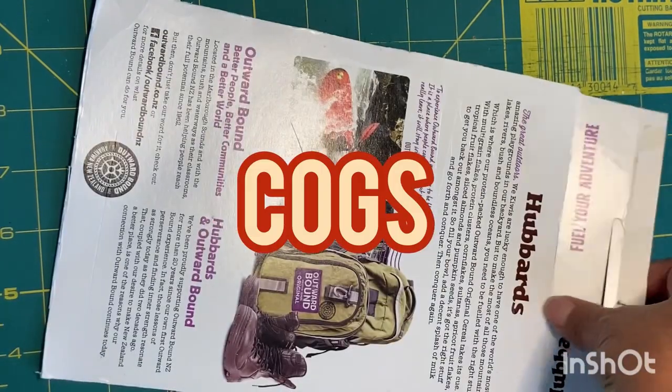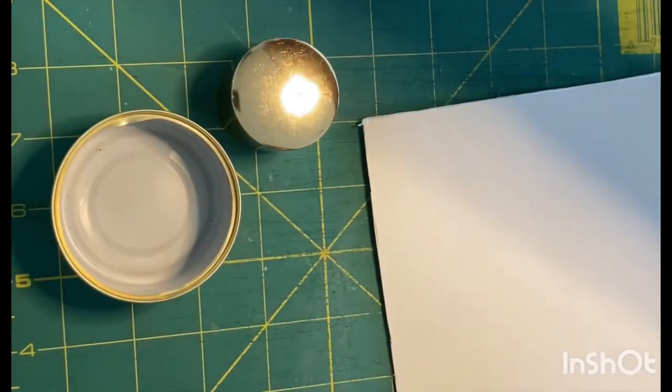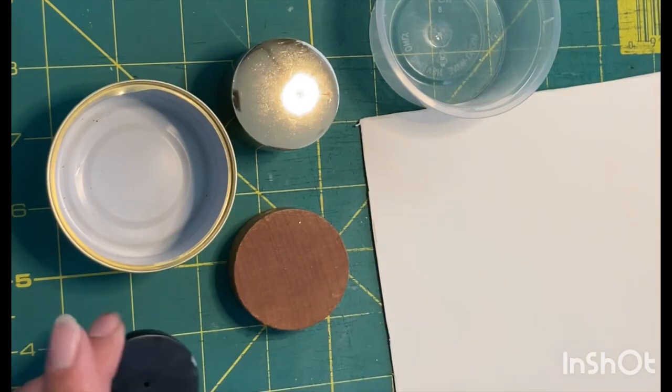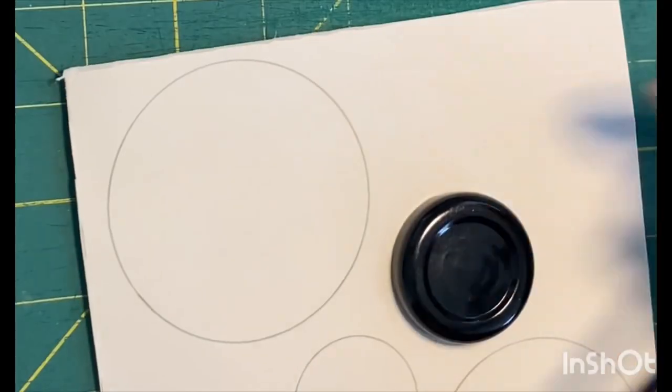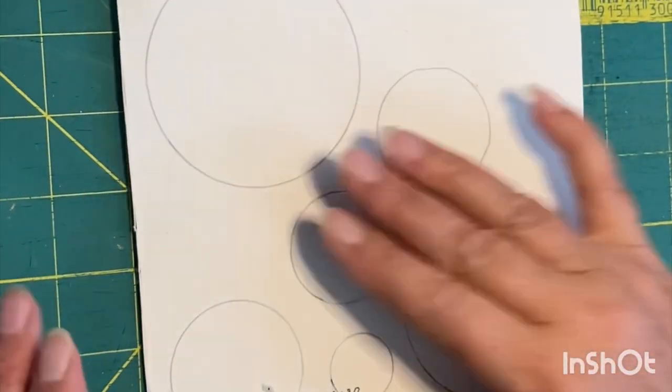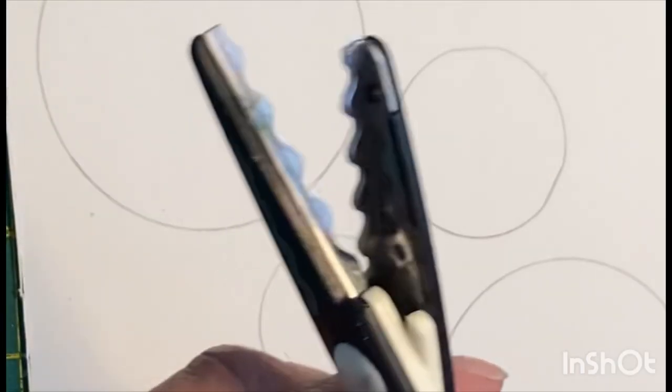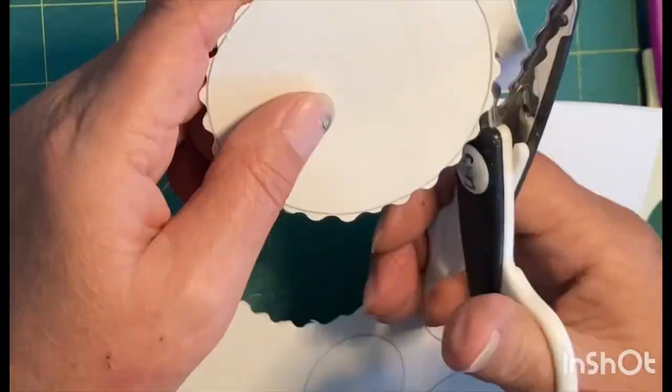To make the cogs, I'm taking a cereal box and various different round objects so I can have different sized cogs. I'm simply going to draw around these and cut them out, and to get the cog edge I'm using these decorative craft scissors in various different shapes.